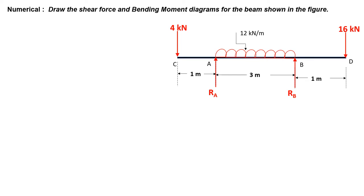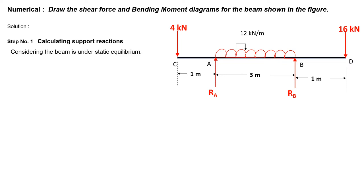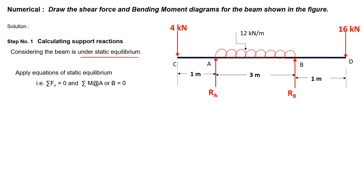The simply supported portion AB is loaded with a uniformly distributed load of intensity 12 kN per meter. To solve this numerical, first we have to calculate the support reactions. There are two supports at A and B, both are simple supports, so there will be only one vertical reaction RA at support A and reaction RB at support B. We assume this beam is under static equilibrium condition.